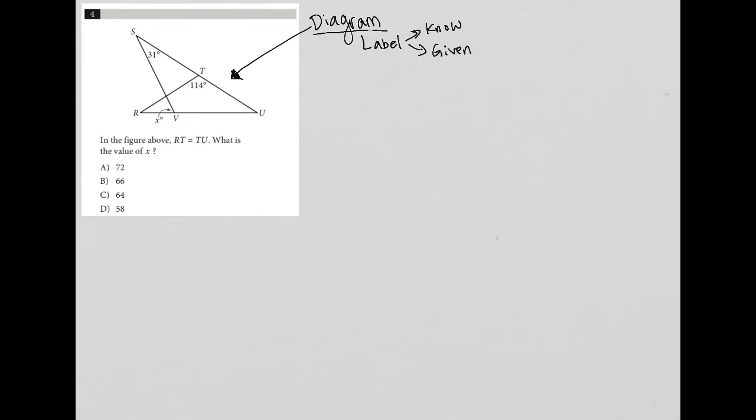The question says, in the figure above, RT is equal to TU. So, we're being given this information that RT is equal to TU. I'm going to put these little tick marks here to represent that those two line segments are congruent. Then the question says, what is the value of X? So, we're looking for this angle here.